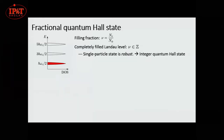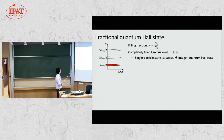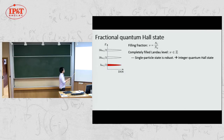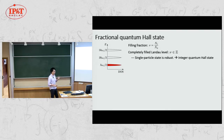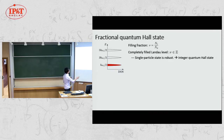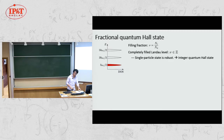Starting from the physics of Landau levels: in a magnetic field, electrons form quantized Landau levels. If all electrons completely occupy the lowest Landau level, this state is known to be very robust to Coulomb interaction. The single-particle ground state is a good description for the integer quantum Hall state, for which the filling fraction is an integer, giving integer Hall conductance.